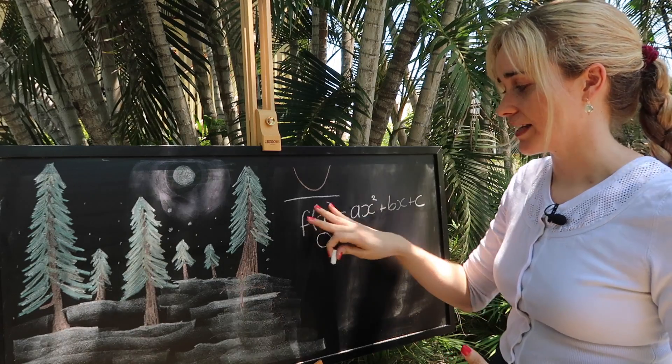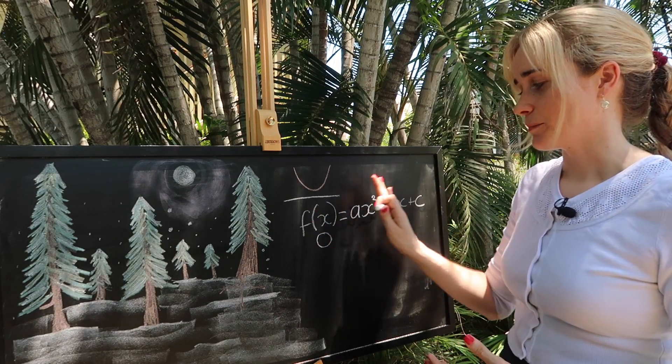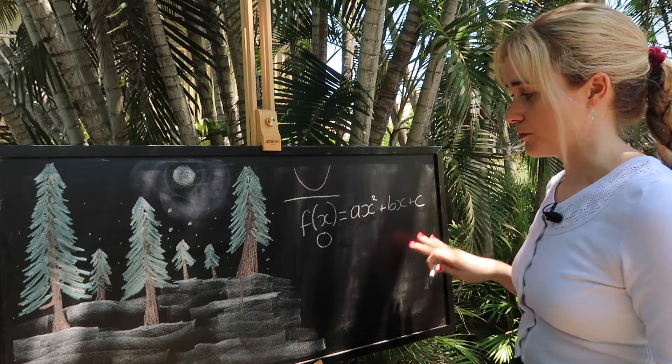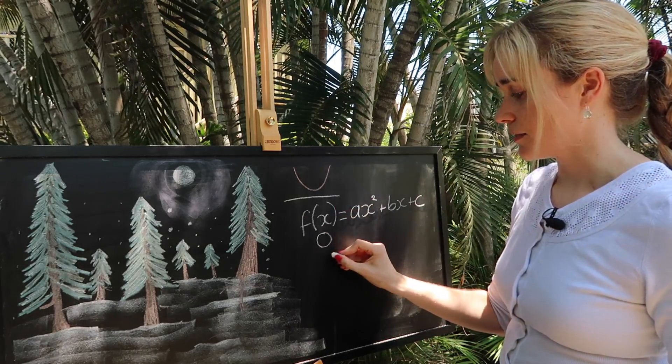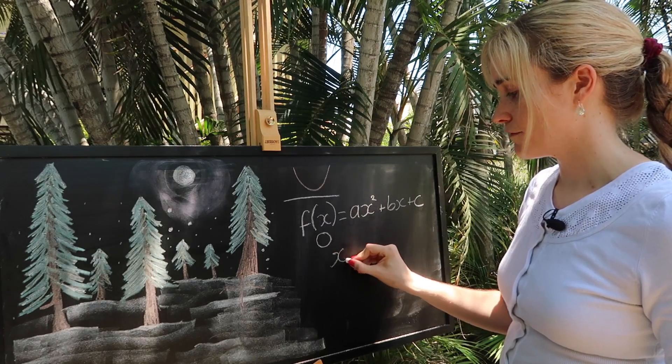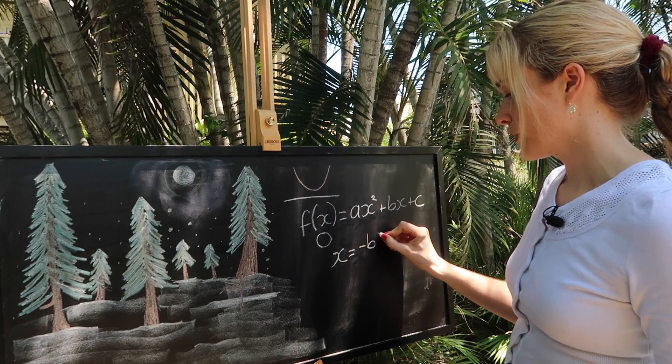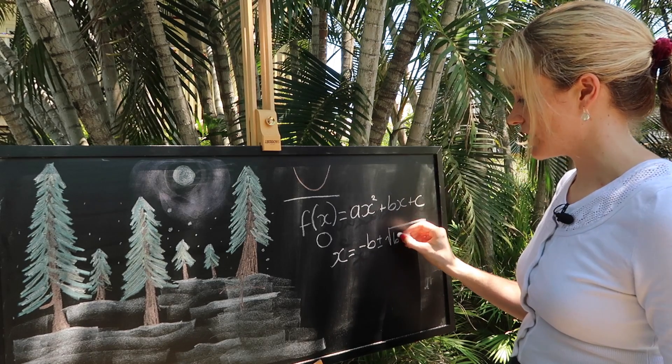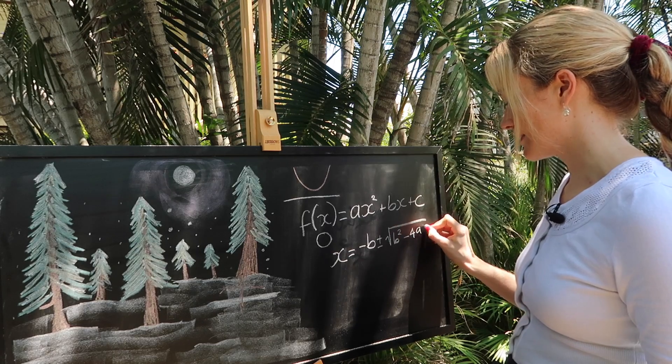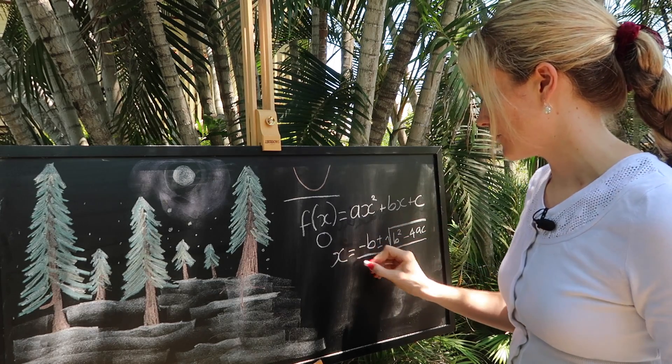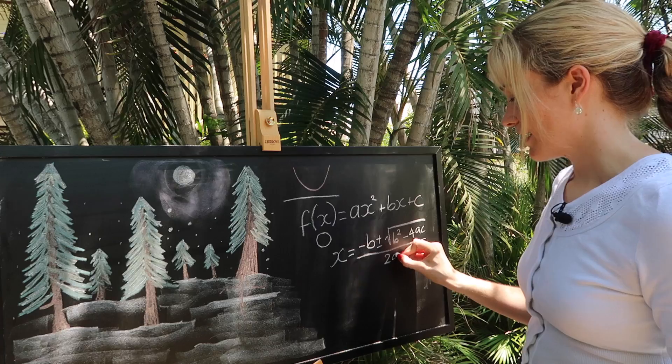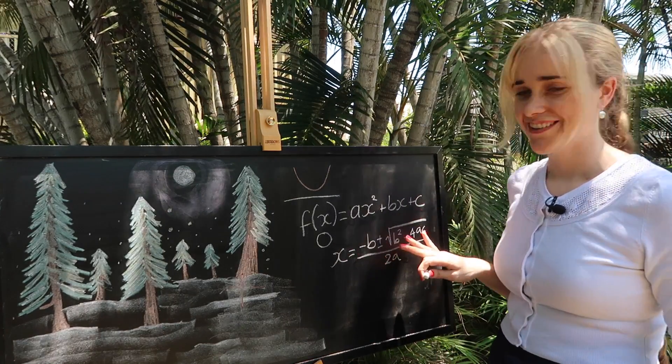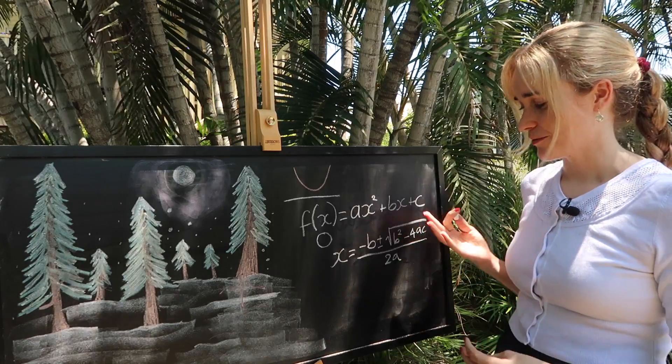If you were to set f(x) equal to zero and complete the square on this, now I'm not going to work through the algebra but I'm going to write down the solution that you would get. It would be that the roots can be found at x = (-b ± √(b² - 4ac)) / 2a. Now if you've done a bit of maths or physics this is probably a very familiar friend to you, our quadratic formula.